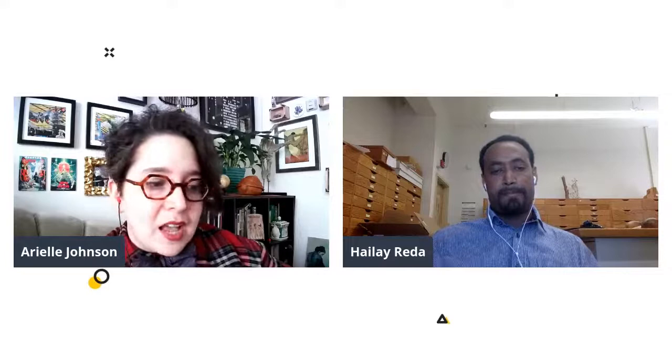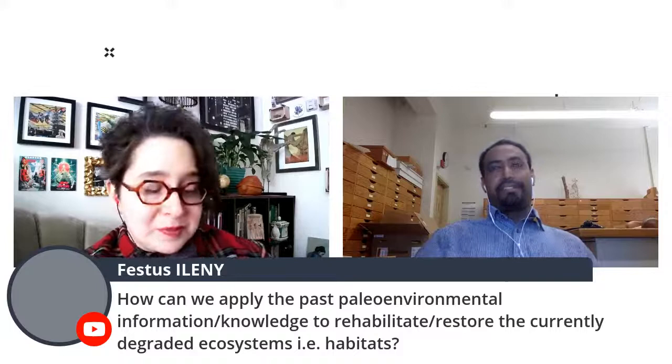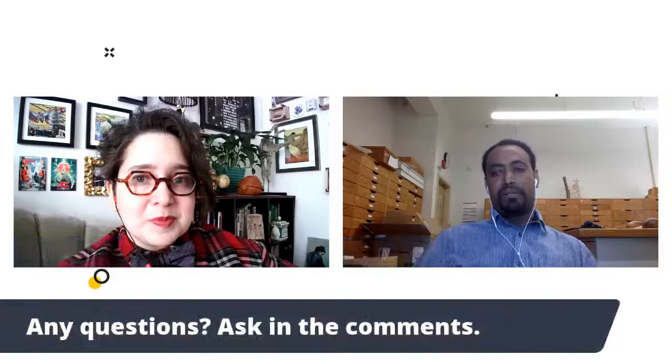How can we apply past paleo-environmental information and knowledge to rehabilitate and restore the current degraded ecosystem? That's a very broad question. There are some important lessons we can take from the previous environment. Environments have been changing over time, and the current environment is of course changing and will continue to change. But I don't really know the exact way of using that for rehabilitation of the current environment. Environments do change over time, so it may not make the most sense to try to return an environment to the way it was.